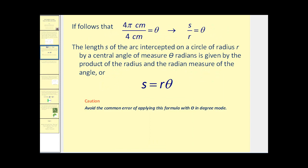It follows that if we took the arc length 4π centimeters and divided it by the radius of 4 centimeters, we would have the angle measure in radians, or π radians. In general, arc length divided by the radius equals the angle in radian measure. Performing cross products gives us s = rθ. This is our general formula for arc length. We need to be careful that our angle θ must be in radian measure.